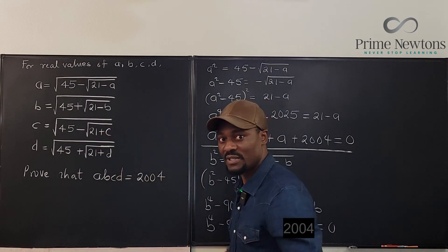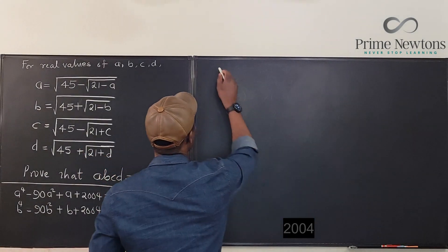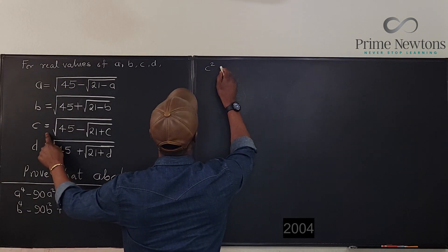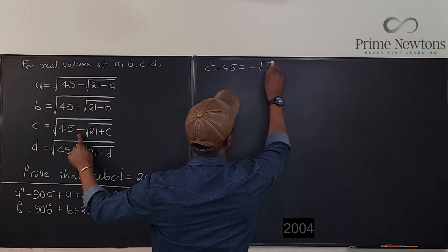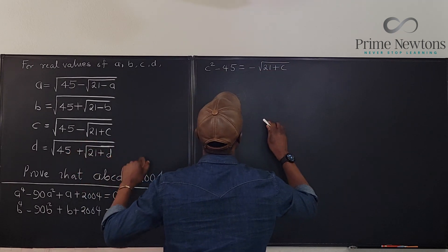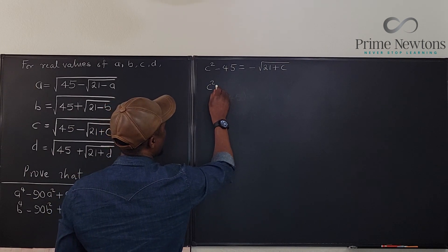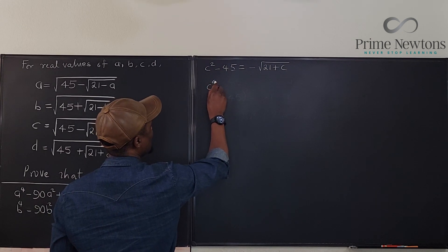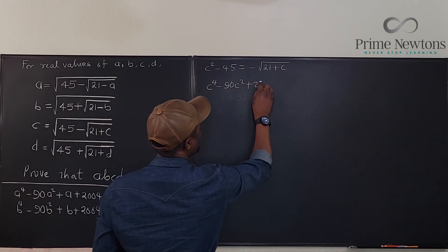I'm going to try it for C. What I'm going to do now is try it for C and for D. Okay, quickly. We're going to say that C squared and then minus 45 is going to be the same thing minus square root of 21 plus C. So when we square both sides, we're going to have C squared minus C to the square. This is going to be C to the fourth minus 90 C squared plus 2025.